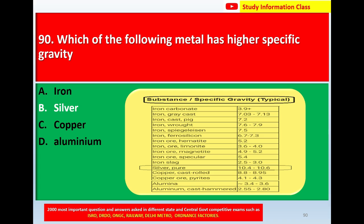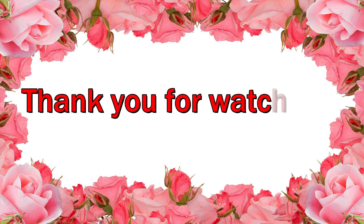A table shows substances and their specific gravity values. Among the given metals, silver has the highest specific gravity. So for question 90, the correct answer is option B: silver. Thank you for watching. Jai Shri Rama.